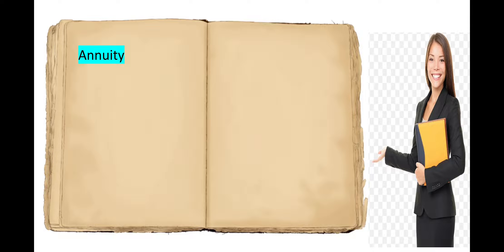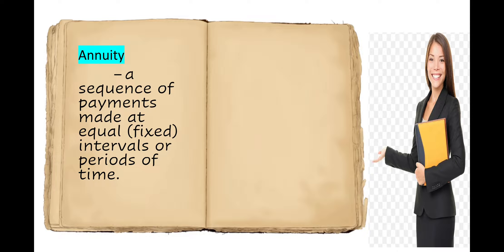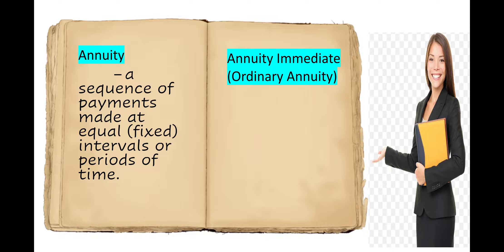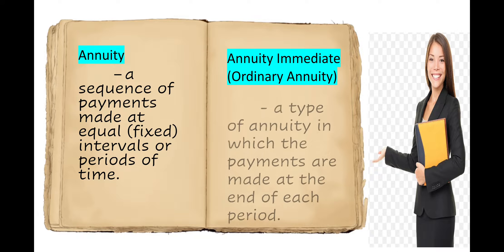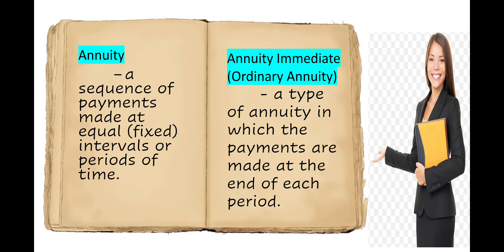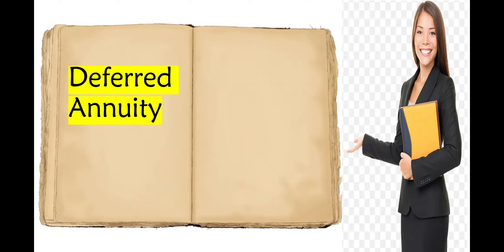In our previous lesson, we defined annuity as a sequence of payments made at an equal or fixed interval or periods of time. Annuity immediate, or ordinary annuity, is a type of annuity in which the payments are made at the end of each period.